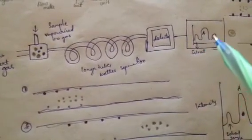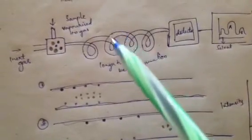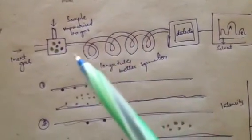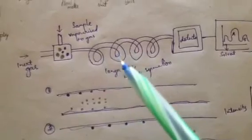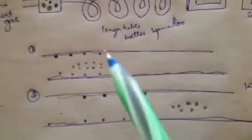The detector detects the samples and gives output as a chromatograph. So what happens actually in these long tubes? The basic idea is that the longer the tubes, the better the separation. So what actually happens inside?